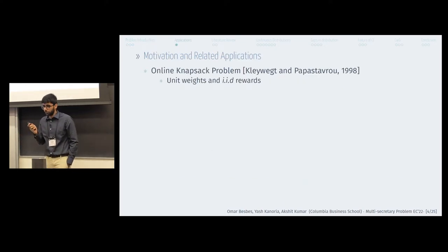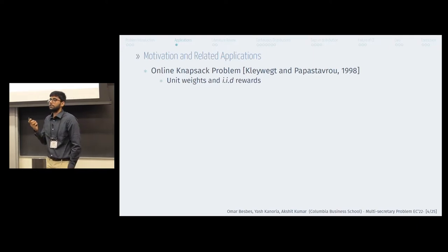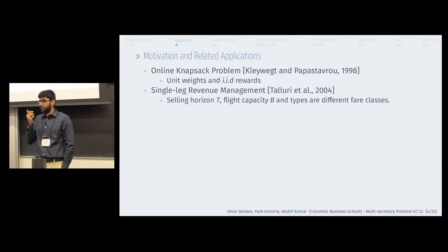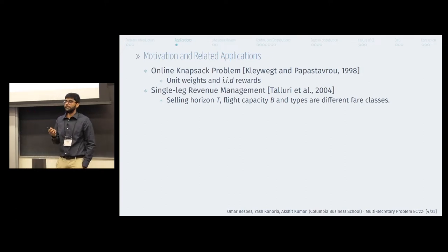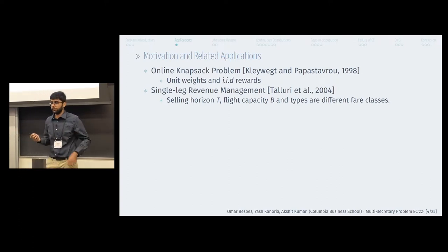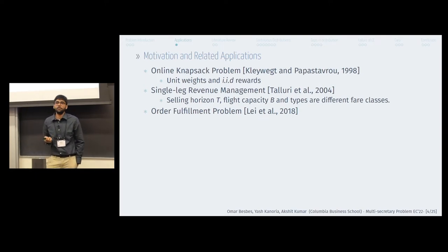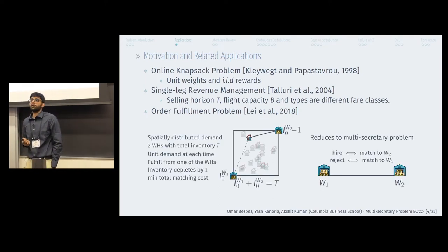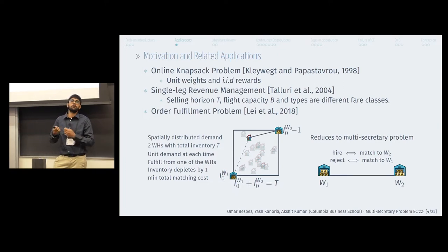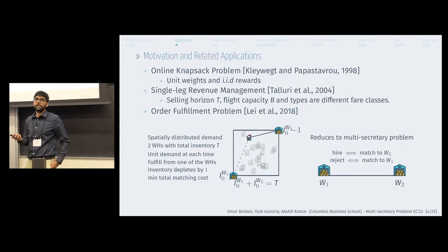If hiring superheroes was not motivation enough, this problem is also related to the online knapsack problem — it's a special case with unit weights and IID rewards. If you're coming from an NRM literature, you will view it as a single-leg revenue management problem with a selling horizon T, a flight capacity of B, and types of different fare classes. This is also closely related to the order fulfillment problem, where you have two warehouses and spatially distributed demand, and this problem can be reduced to a multi-secretary problem.